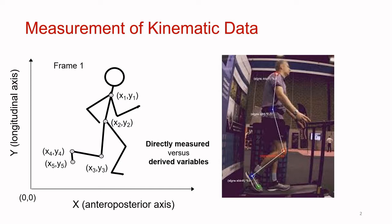An important distinction to make is between directly measured variables and derived variables. Using this motion capture system, we are directly measuring the positions of each of the markers attached to the patient. Alternatively, if we wanted to directly measure angle, we could use something like an electrogoniometer. If we're interested in more than position — for example, if we wanted to know maximum knee flexion as the patient walks on the treadmill — then we would need to derive that measure of knee flexion from our direct measurements of position.